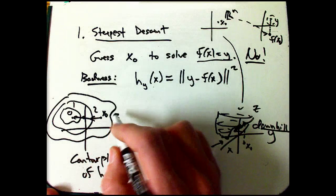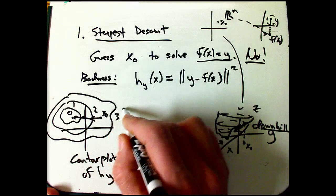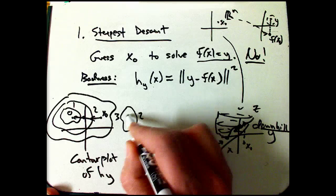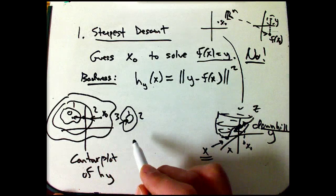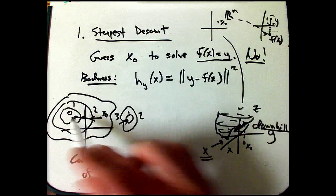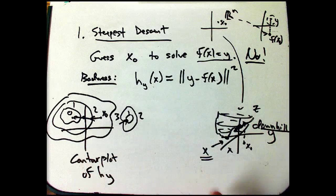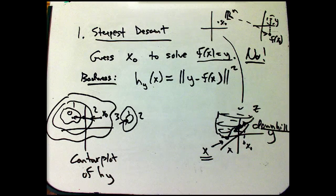Now practically speaking, that might be a problem, because maybe there's another minimum over here, but that minimum isn't zero, and maybe if I'm here, I'm actually going to go downhill towards that guy, and I'm not going to get exactly what I want.